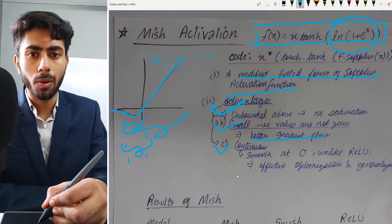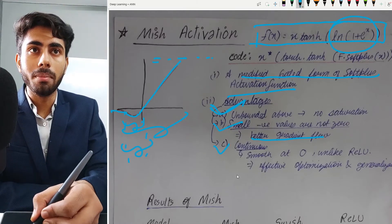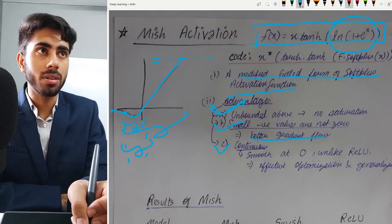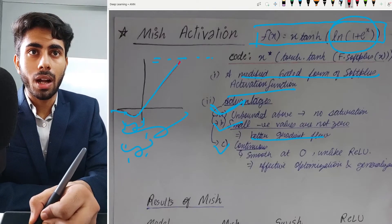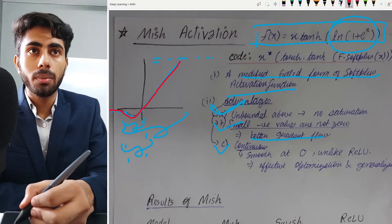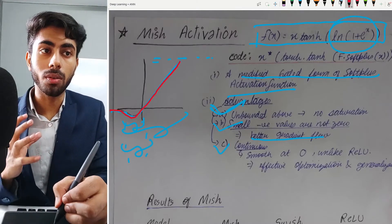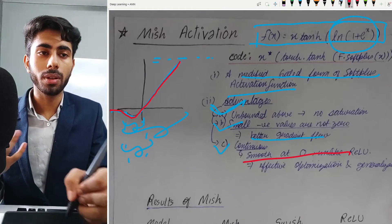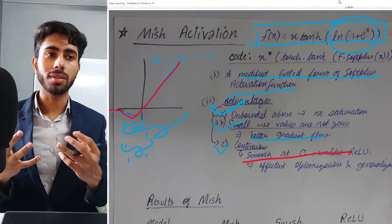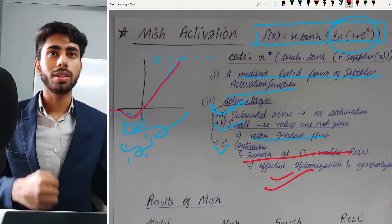The third point is that as you can see in the graph of mish activation, the graph is smooth and continuous at every point. Because of that, it is smooth at zero, unlike relu. Therefore, mish activation possesses higher effective optimization and generalization properties.